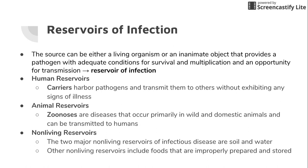Zoonotic diseases can be transmitted by several routes: direct contact with animals — such as a bite — or direct contact with animal waste, like cleaning kitty litter. Other routes include contaminated food or water, contaminated air, contact with hides, furs, or feathers, and consuming an infected animal.